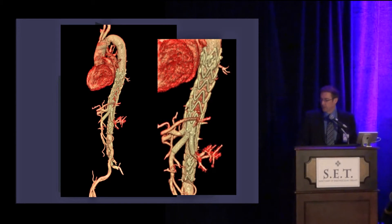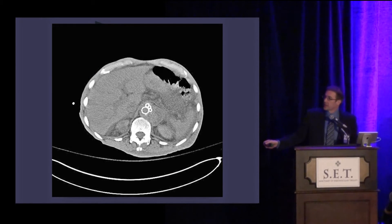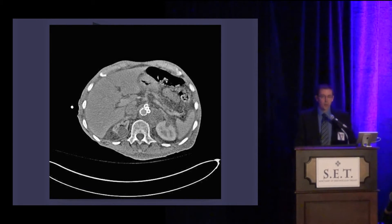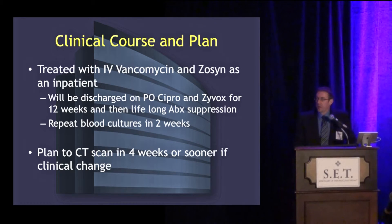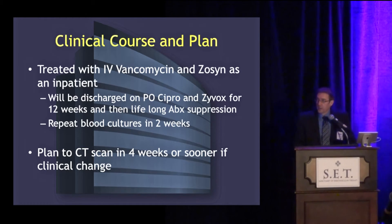On the delayed images, you can still see an area of rim enhancement. So far he has done well clinically and we are following him very closely, hoping we won't have to go in and do any debridement of the aortic and periaortic tissue. Currently he's being treated with IV vancomycin and Zosyn. Our plan is to discharge him home on PO Cipro and Zyvox for 12 weeks, then probably some form of lifelong antibiotic suppression. We'll obtain repeat blood cultures in two weeks and scan again in about four weeks.